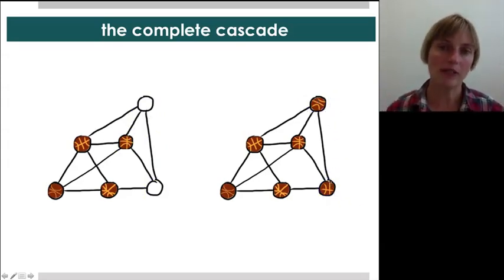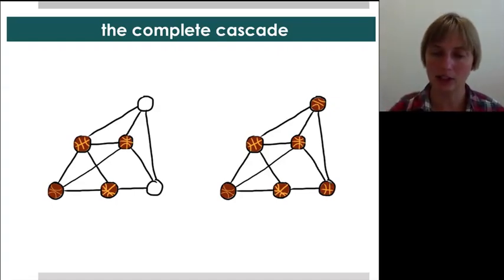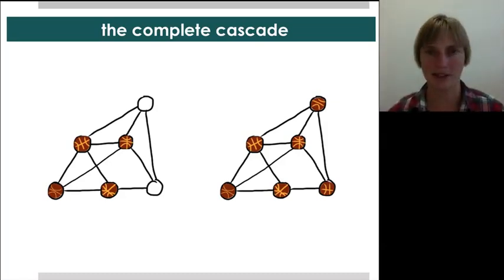And so, what you just saw was a cascade going through the network. Even though it just started with two nodes changing their minds, or having their minds changed for them. And then everyone goes ahead and switches to basketball, which presumably is good, because it seems like the payoff for basketball in this fake scenario is higher than it is for soccer.